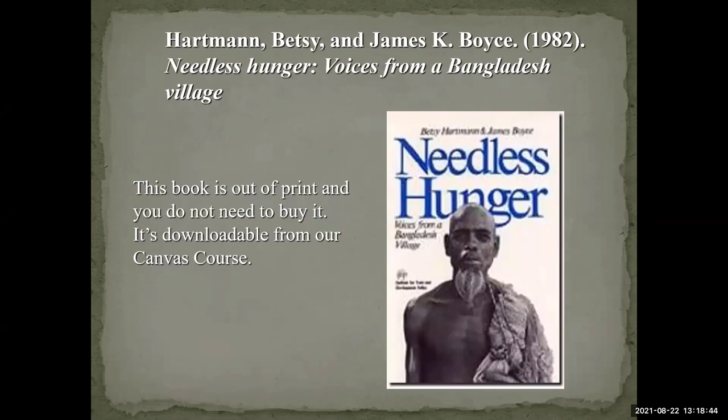Another book we'll be reading, which is very short — more like an article than a book — is by Hartman and Boyce, Needless Hunger: Voices from a Bangladesh Village. It examines why in a country that produces more than enough grain to feed the people living there, are there so many people starving and dying from hunger. Is it a population problem — too many people and not enough resources? Or is it a distribution and inequality problem where people don't have access to the resources we all need to survive? You don't need to buy this; it's downloadable on Canvas. We'll be reading it towards the end of the class.